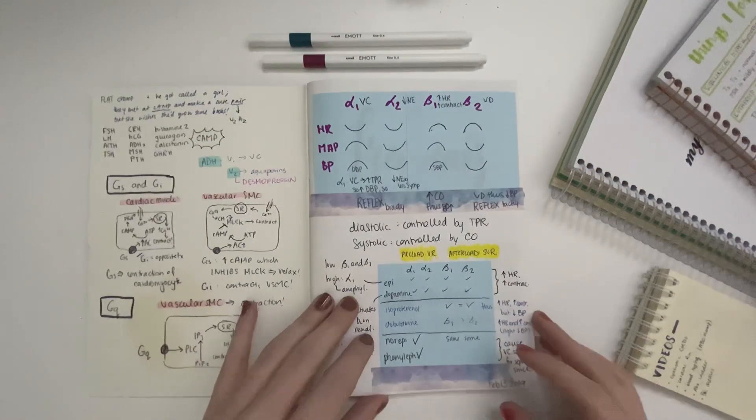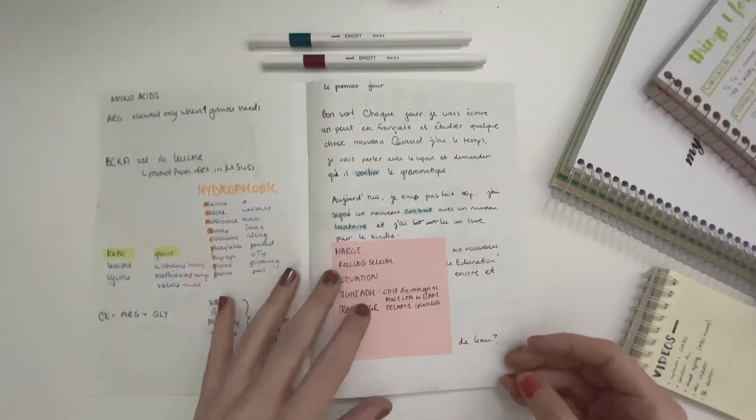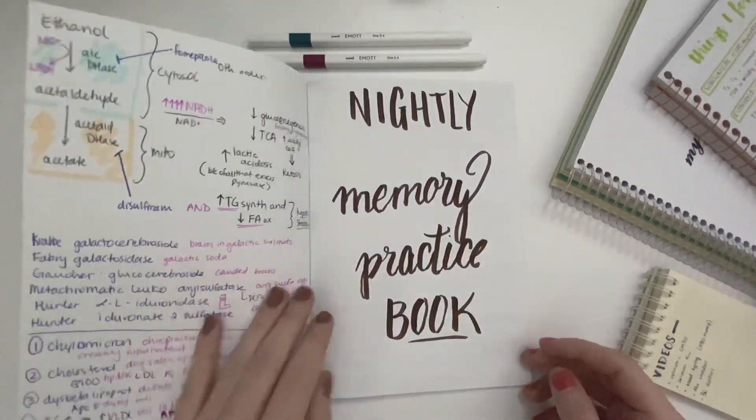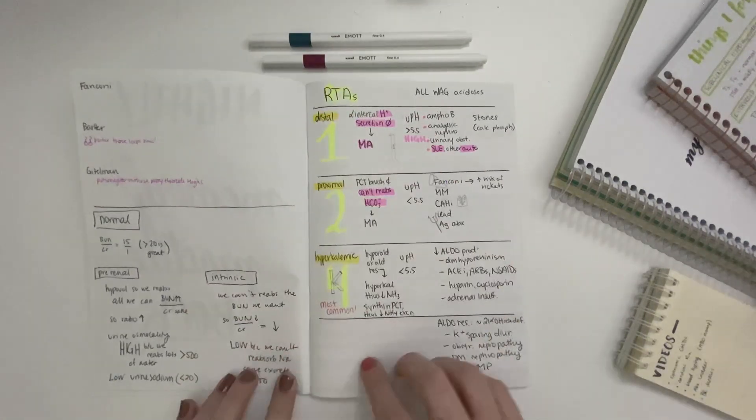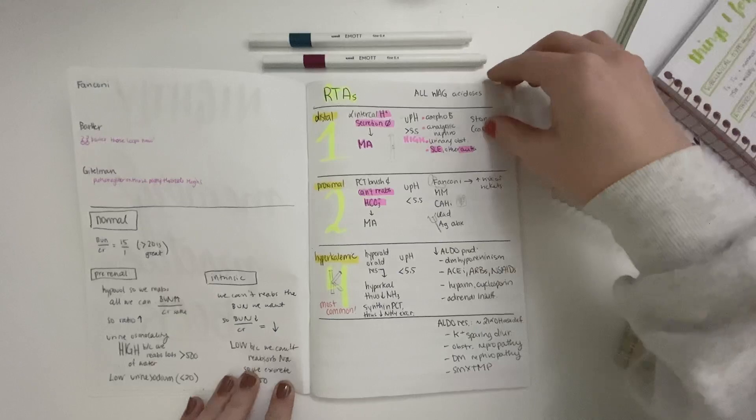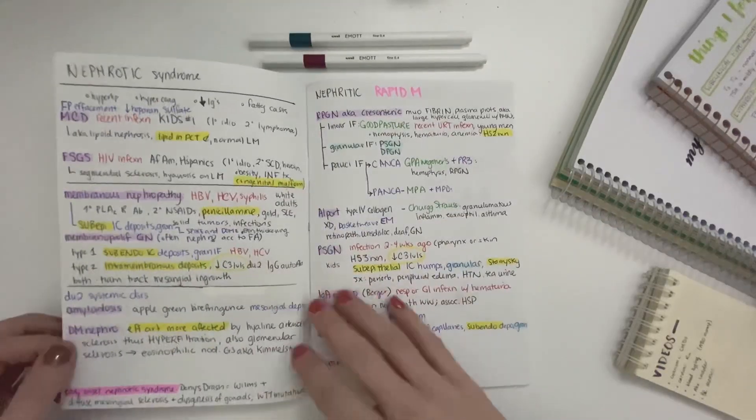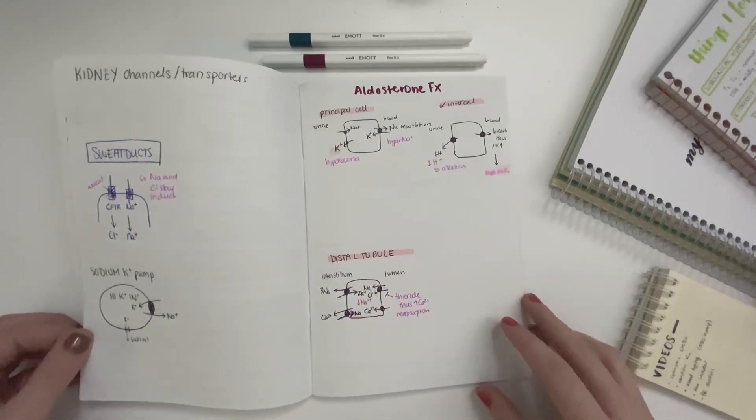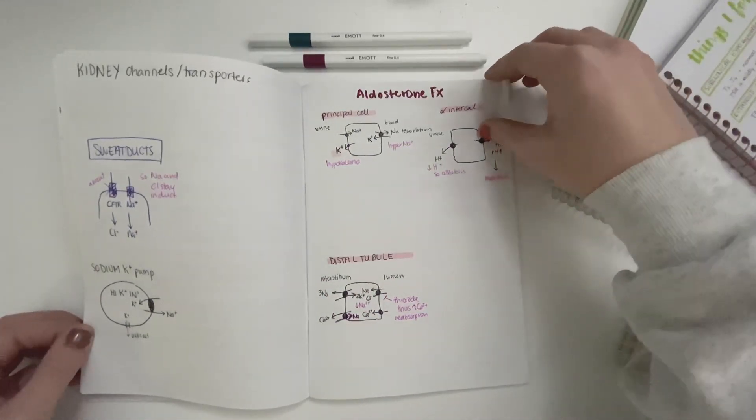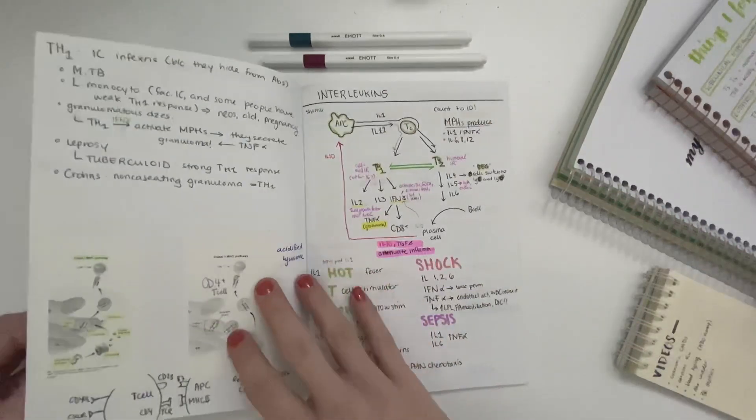This little notebook was one that I started in the very beginning of my prep but I didn't end up using that much early on, which ended up being for the best. The reason being was that everything in the beginning was new and confusing and I didn't know what I didn't know. This notebook became way more useful when I used it towards the end of my prep and I was writing down only the things that I knew I would consistently get wrong.